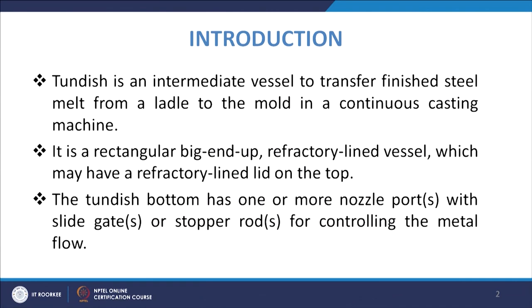The tundish is between the ladle and the mould. It is an intermediate vessel to transfer the finished steel melt from a ladle to the mould in a continuous casting machine. Its job is to receive the liquid metal from the ladle and supply the liquid metal to the mould. Normally it is a rectangular, big-end-up, refractory-lined vessel which may also have a refractory-lined lid on the top.